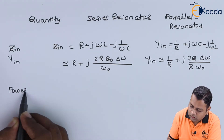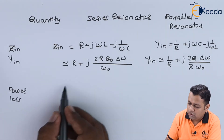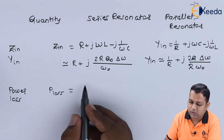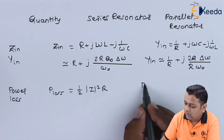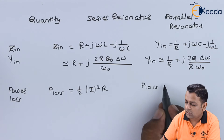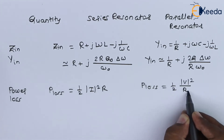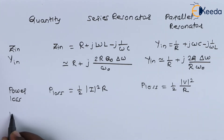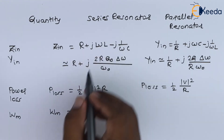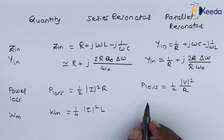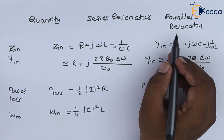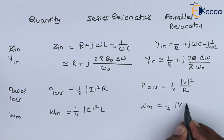For power loss: the series resonator has P_loss = (1/2)|I|²·R, while the parallel resonator has P_loss = (1/2)|V|²/R. For magnetic energy storage W_M: the series resonator gives W_M = (1/4)|I|²·L, and the parallel resonator gives W_M = (1/4)|V|²·(1/ω²L), since the inductor stores magnetic energy.